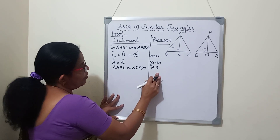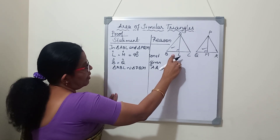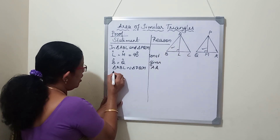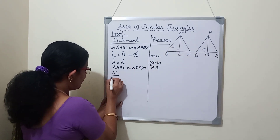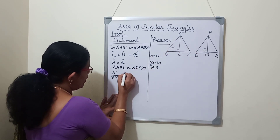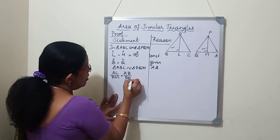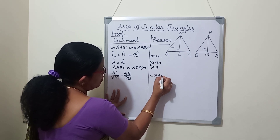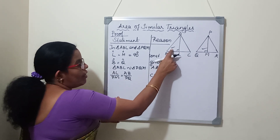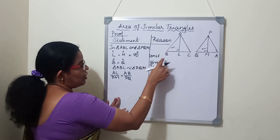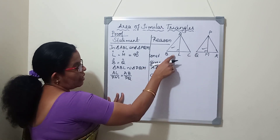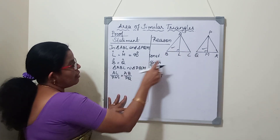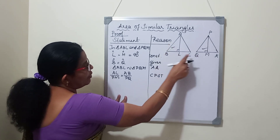Now we will write the ratio of the corresponding sides. We will write the important sides: AL by PM is equal to AB by PQ. The reason is CPST - corresponding parts of similar triangles. Angle L equals M by construction, angle B equals Q as given, because triangles ABC and PQR are already similar. These two triangles are similar by AA criteria, and the ratio of sides AL by PM is equal to AB by PQ. We will write this as equation 1.